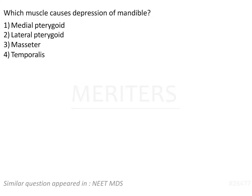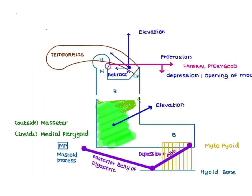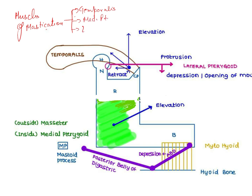Which muscle causes depression of the mandible? The options are medial pterygoid, lateral pterygoid, masseter, and temporalis. I will give you an illustration to show the various muscles of mastication and their function. The muscles of mastication arise from the first pharyngeal arch, and these are going to be your temporalis, medial pterygoid, lateral pterygoid, and masseter. There is also some contribution from certain infrahyoid muscles.